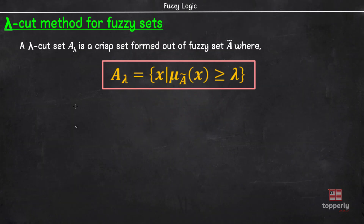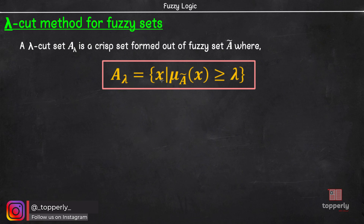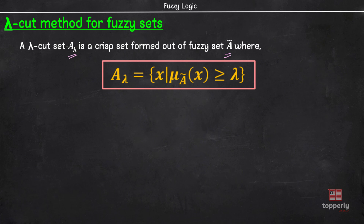A lambda cut set A-lambda is a crisp set formed out of a fuzzy set A, where A-lambda is equal to the set of X where the membership value of X is greater than or equal to lambda. One thing I'd like to highlight here is that A-lambda is a crisp set derived from its parent fuzzy set A — that is, A-lambda is not a fuzzy set.